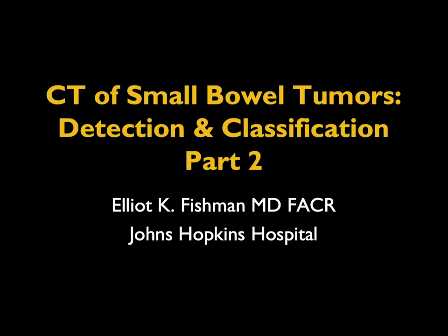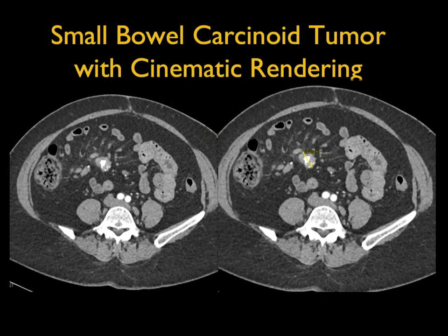Hi, this is Elliot Fishman and welcome to part two on small bowel tumors. We left off speaking about carcinoid tumors, making the point that they are occurring more frequently these days. Carcinoid tumors are commonly seen as a mass in the root of the mesentery with desmoplastic reaction, and about 70-plus percent of them calcify. You can see other masses in the mesentery that calcify — calcified nodes, sclerosing mesenteritis, treated lymphoma — but when you see desmoplastic reaction, it's invariably going to be carcinoid.